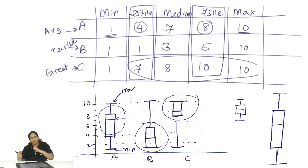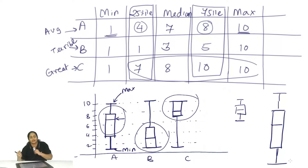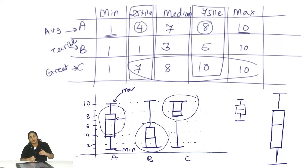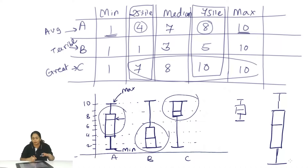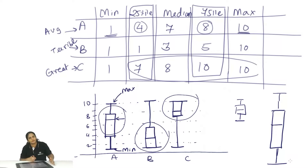A box and whiskers plot tells you the range of values: the minimum value, the 25th percentile value, the median value, the 75th percentile value, and the maximum value. It is sometimes also used in stock trading to show the open, close, highs and lows of a stock. From the perspective of GMAT, the important elements are minimum, maximum, 25th percentile, 75th percentile, and median — that is essentially what will be asked.